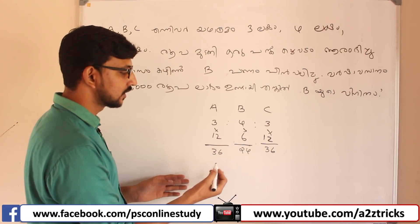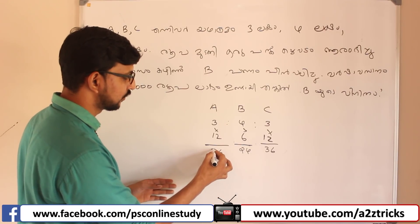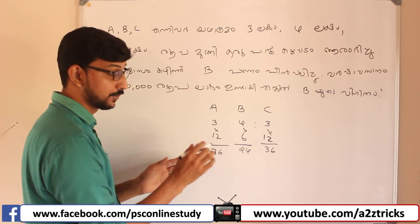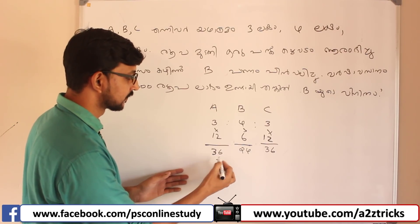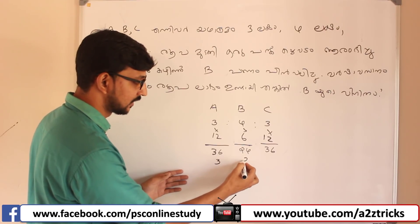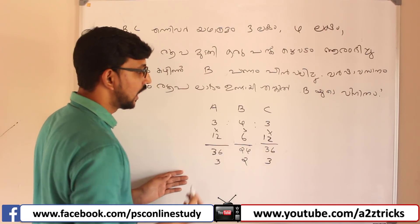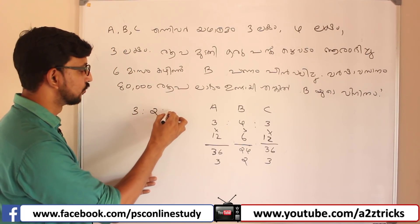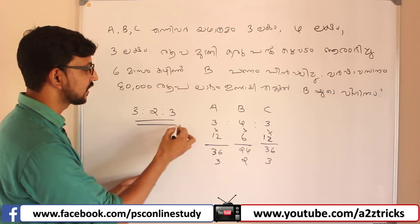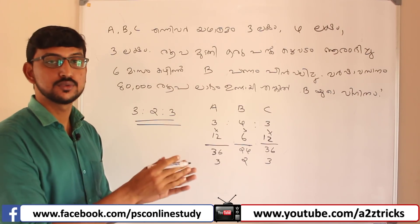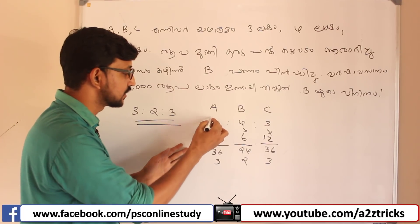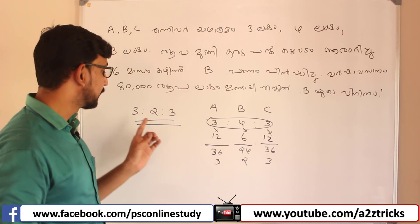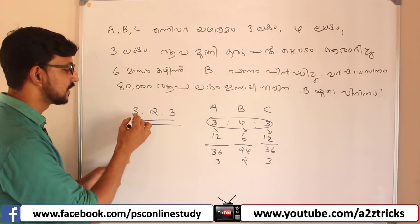Let's take a short term. Here, 12 divide. 12, 12, 24, 36. 13 by 13, that is 3. 24 by 13, that is 2. 36 by 13, that is 3. The final ratio is 3, 2, 3. That is the final ratio. That ratio is 3, 4, 4, 3. Let's divide and get the answer. The final ratio is 3, 2, 3.